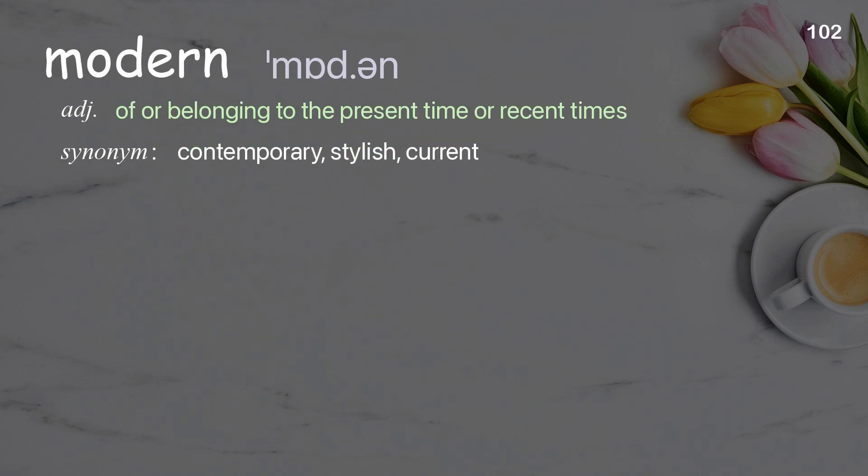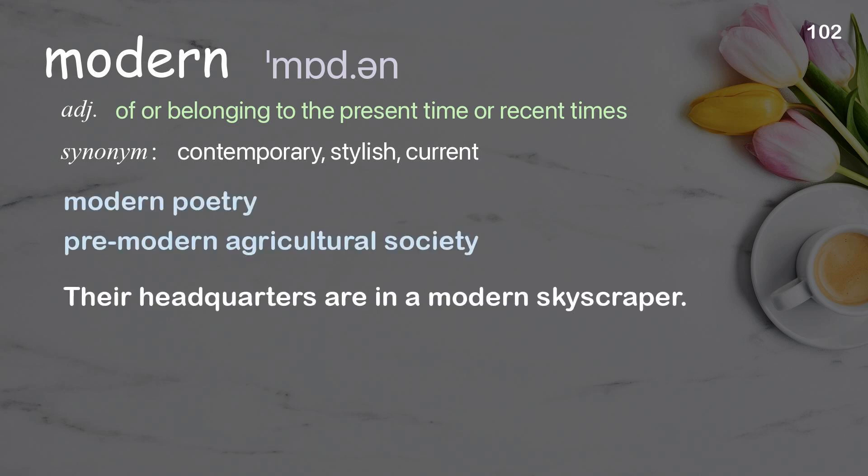Modern: of or belonging to the present time or recent times. Examples: modern poetry; premodern agricultural society. Their headquarters are in a modern skyscraper.